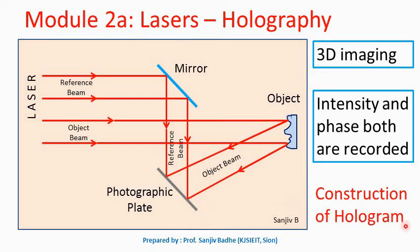Why do we need a laser beam? Why can't it be done with ordinary light? Because we are recording the phase of the light wave, we need the light waves to be in phase, and that is possible only with a laser beam, since laser light is coherent. In ordinary light, the waves are not coherent and therefore cannot be used to record the phase difference. That is why a laser beam is required for holography.